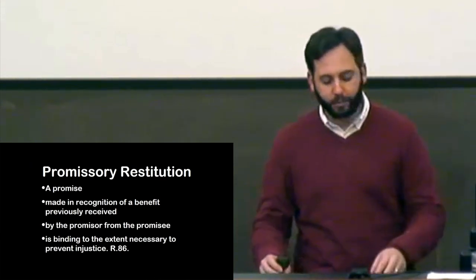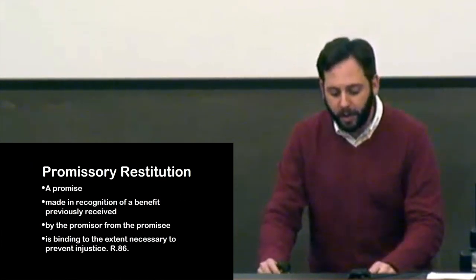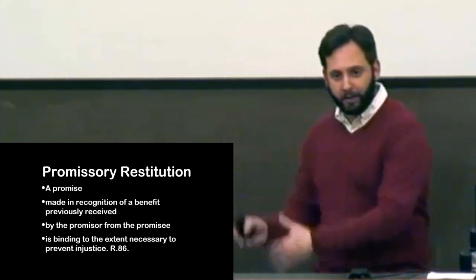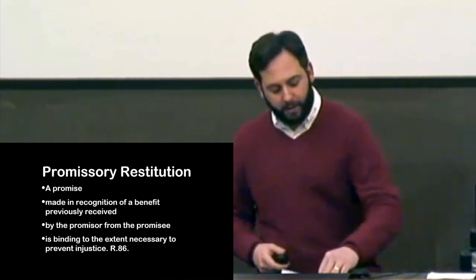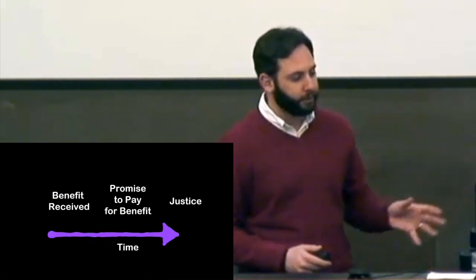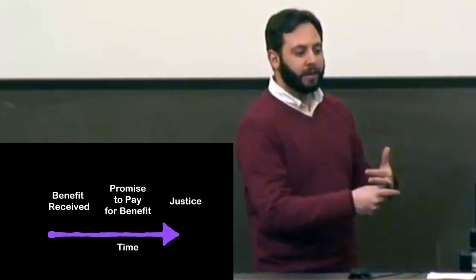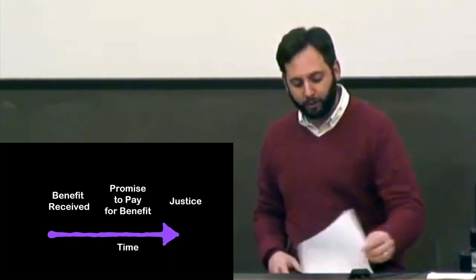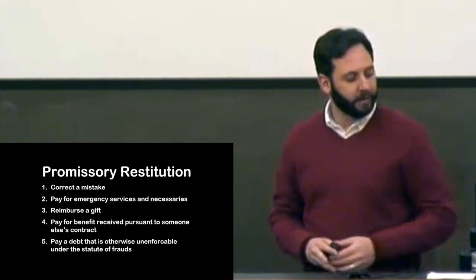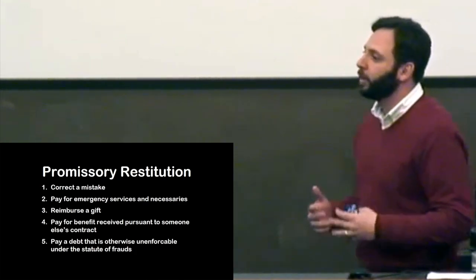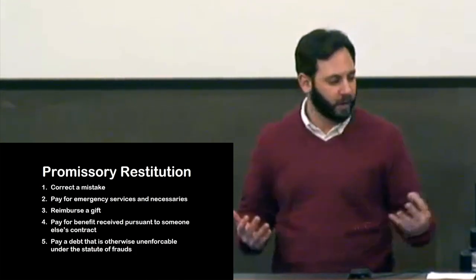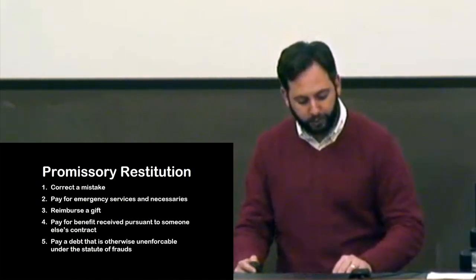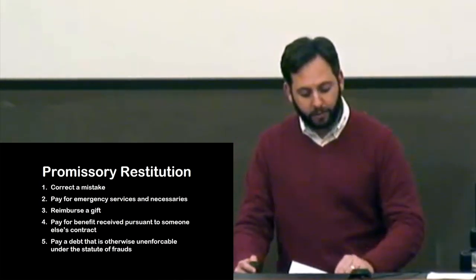The second doctrine is promissory restitution: a promise made in recognition of a benefit previously received. Here the action comes before the promise, and then we ask whether enforcing the promise is required to prevent injustice — the promise acts retroactively. Five categories of contracts are generally enforced under this doctrine: promises to correct a mistake, to pay for emergency services, to reimburse a gift, to pay for someone else's contract, and to pay for a debt.